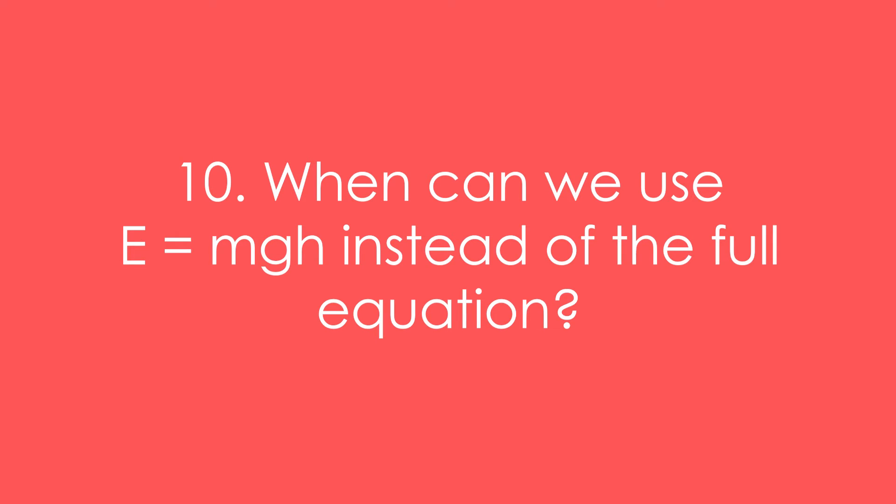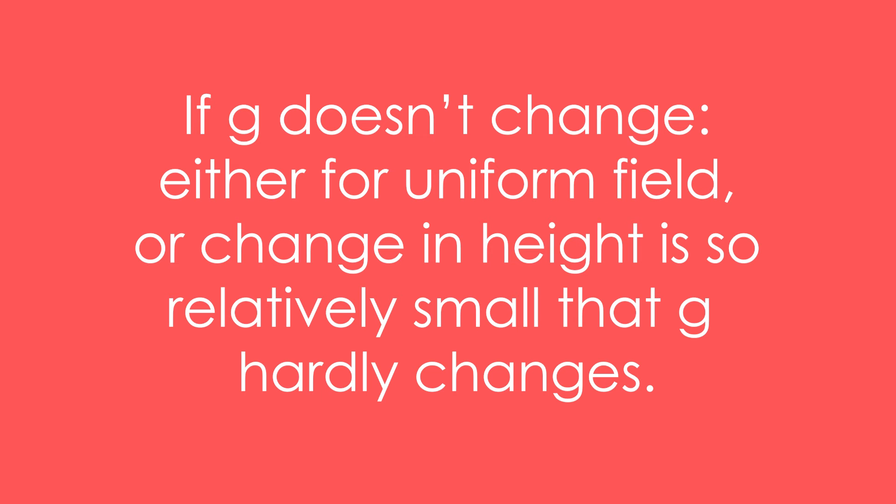Ten, when can we use E equals mgh instead of the full equation that we've just seen? We can only use it if g, field strength, doesn't change. Thus, either for a uniform field, we don't really have those in gravity really, but if we zoom in close enough, the change in height is so relatively small that g hardly changes, so we can use it. So if we're throwing a ball up in the air, then we can just use E equals mgh. We don't have to use E equals GMm over r.